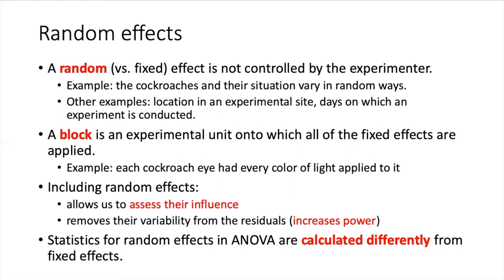So the cockroach and its situation essentially was a block, and the fixed effect that we applied to that block was each of the three colors. The reason why we want to include random effects in an ANOVA is partially to be able to assess their influence. It's actually possible to determine what percentage of the variance is caused by random effects.